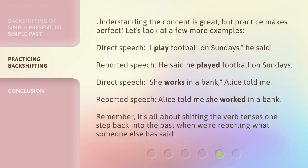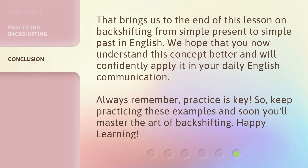Understanding the concept is great, but practice makes perfect. Let's look at a few more examples. Direct speech: "I play football on Sundays," he said. Reported speech: He said he played football on Sundays. Direct speech: "She works in a bank," Alice told me. Reported speech: Alice told me she worked in a bank. Remember, it's all about shifting the verb tenses one step back into the past when we're reporting what someone else has said. That brings us to the end of this lesson on backshifting from simple present to simple past in English. We hope that you now understand this concept better and will confidently apply it in your daily English communication. Always remember, practice is key, so keep practicing these examples and soon you'll master the art of backshifting. Happy learning!